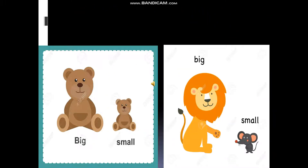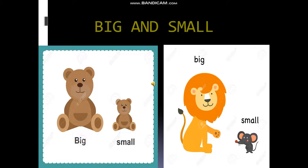Now the next topic is big and small. In the first picture, the first one is big teddy and the second one is small teddy. And in the second picture, lion is big and rat is small.